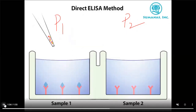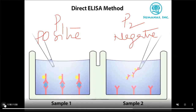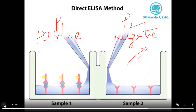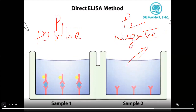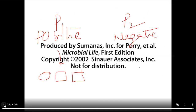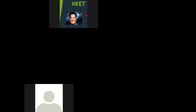Enzyme-linked antibodies go and bind with the antigen on the other side in the positive case. Free fluid is absorbed again. We add the substrate. In the positive case, the substrate binds with the enzyme-linked antibody and a color change occurs. No color change in the negative case. This is the direct ELISA method.